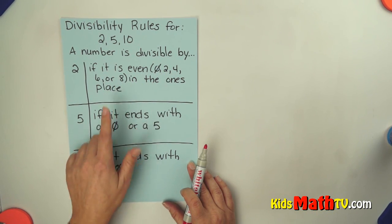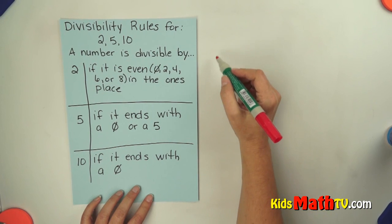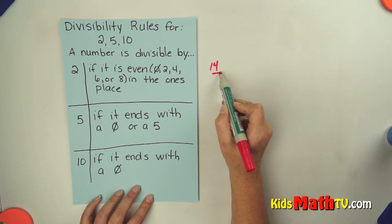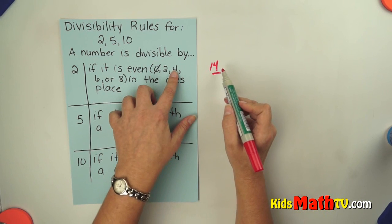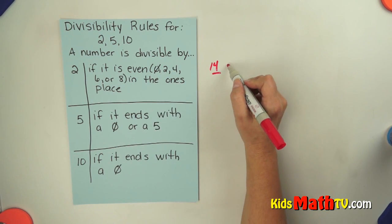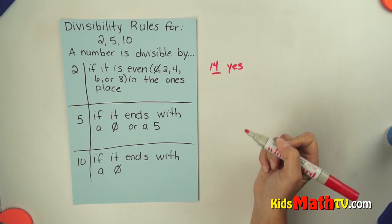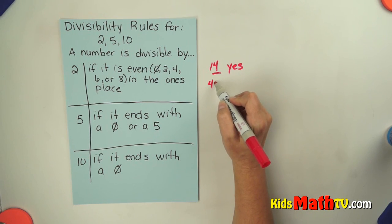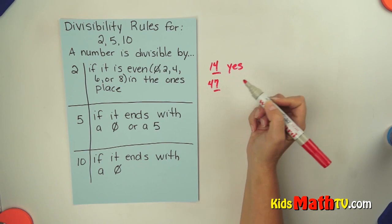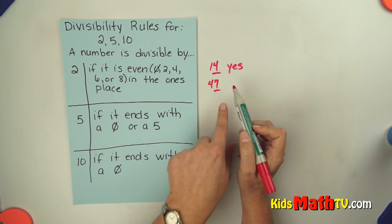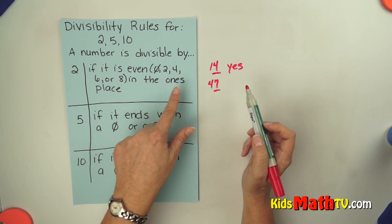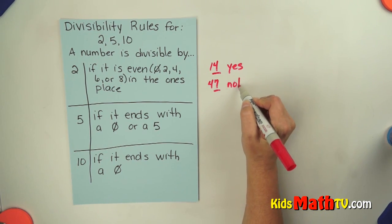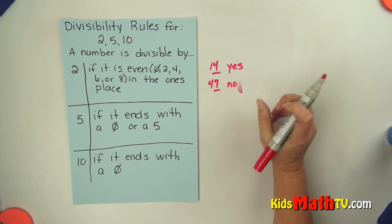If we look at a number like 14, we simply look at the ones place. Is it an even number? It is, so yes, it is divisible by 2. If we take the number 47, we look at the ones place. Is 7 equal to 0, 2, 4, 6, or 8? It is not, so 47 cannot be divided by 2 evenly.